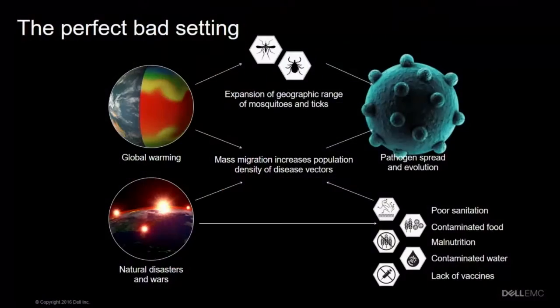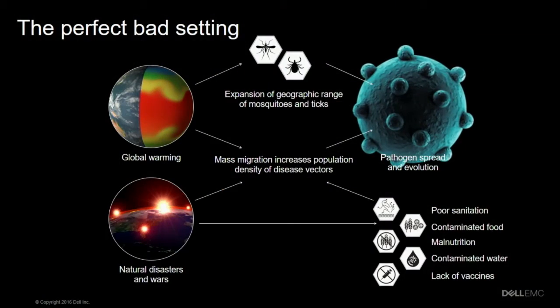The world today seems to be hard at work to create the perfect setting to accelerate these transfers of genes. Global warming keeps extending the geographic reach of mosquitoes and ticks, and along with natural disasters and political crises, it's causing mass migrations — increasing the population density of humans and disease vectors in areas with poor sanitation and exposure to contaminated food and water.